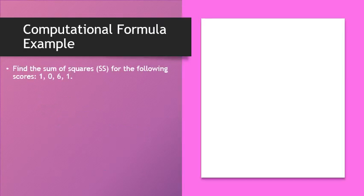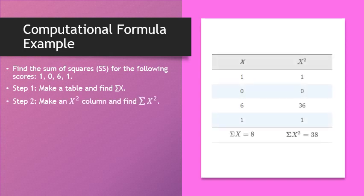So let's look at an example using this computational formula. Find the sum of squares for the following scores: 1, 0, 6, and 1. Step 1, you're going to make your table and find the summation of x. If you look on the right, you'll see the table. I listed the scores 1, 0, 6, 1 and I added them up and got the summation of x equal to 8.